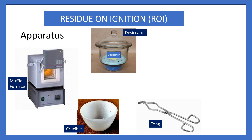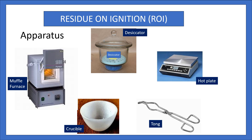Fourth is Tongs — they help you handle the hot crucible while placing it in the desiccator. Fifth is the Hot Plate — it is used for charring your sample before keeping the crucible in the muffle furnace for ignition. In case you don't have a hot plate, you can also use an incinerator.